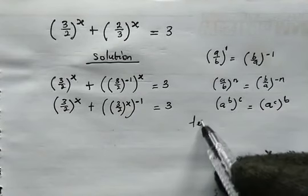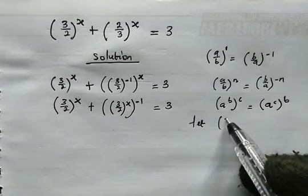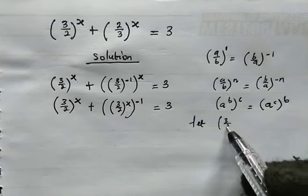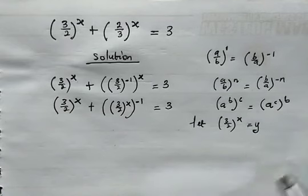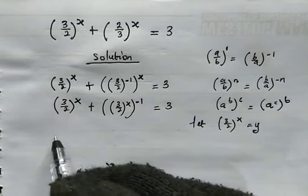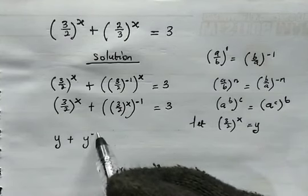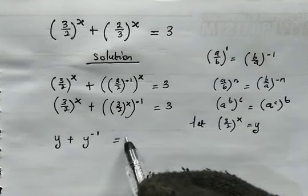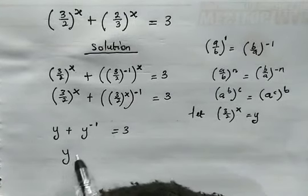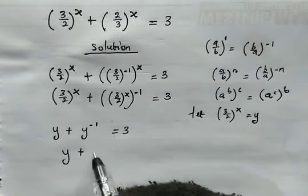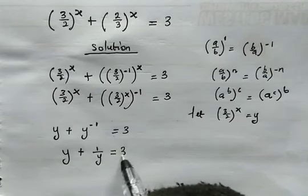Now let us go ahead and make the following substitution. We are going to let 3 over 2 to the power of x equal y. From here, we get y plus y to the power of negative 1, which is equal to 3. This actually means we have y plus 1 over y, which is equal to 3.